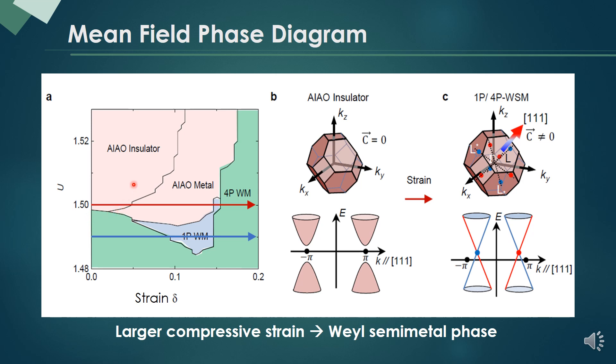First, you can notice that the insulating ground state can be semimetallic when the strain is applied stronger, and at last, we can reach at the Weyl semimetal like this.